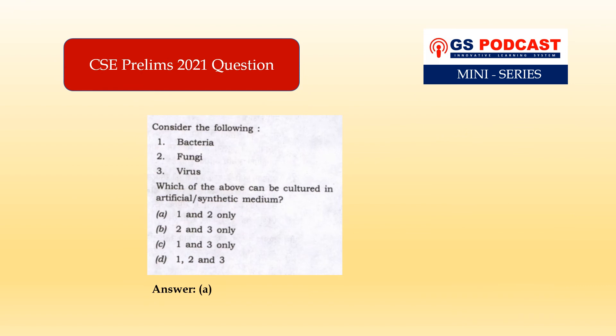Now let's see a question asked in CSC exams. Three microorganisms are given and it is asked which of them can be cultured in an artificial or synthetic medium. Microbes like bacteria and fungi can be grown on nutritive media to form colonies, and such cultures are useful in studies of microorganisms. However, unlike bacteria, viruses require a living host for their replication. The correct answer is option number 8 — bacteria and fungi can be cultured in the artificial or synthetic medium.